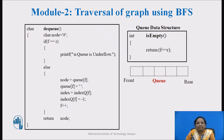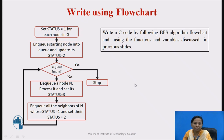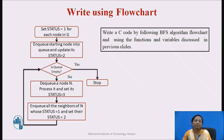The isEmpty function checks whether the queue is empty or not. If front equals rear, then the queue is empty. Now we will discuss the BFS algorithm by following the flowchart. You can pause the video for some time and write a C code by following the BFS algorithm flowchart and using the functions and variables discussed in previous slides.